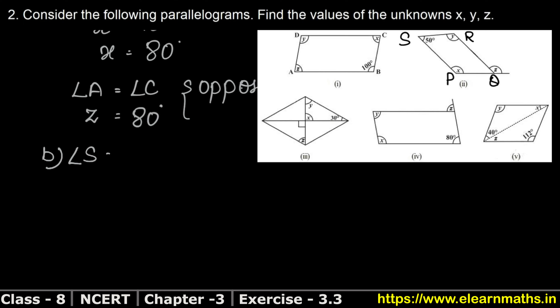So in part B, angle S equals the interior angle of Q, which means angle S equals 50 degrees, because opposite angles of a parallelogram are equal.